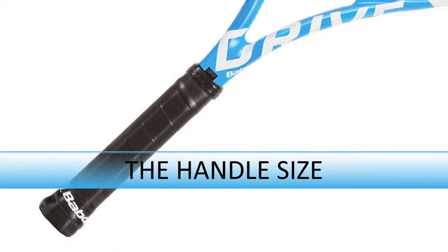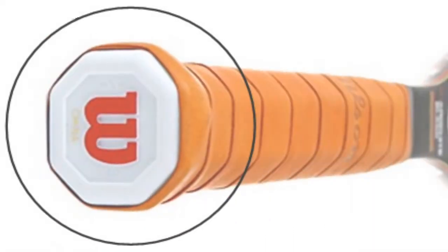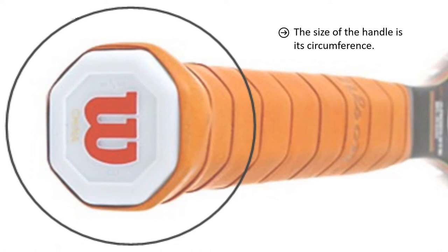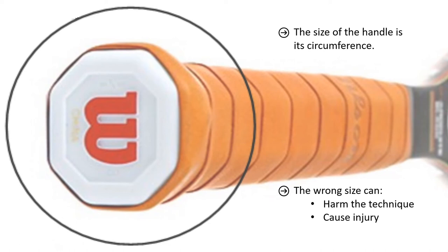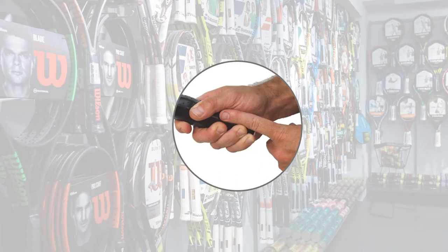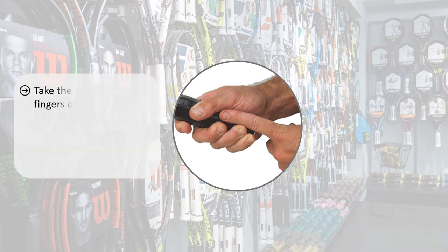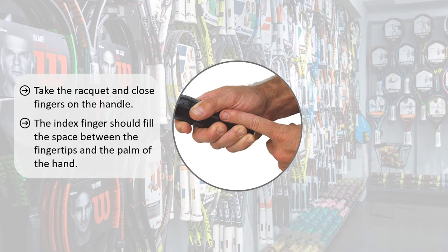Let's now look at the handle size of a racket. What is meant by the size of the handle is actually its circumference and not its length. An unsuitable size for the player's hand interferes with technique and can result in injury — for example, a handle that is too thick forces the player to hold the racket tighter, causing additional tension in the wrist and forearm. There are two ways to determine the right size. The first, the simplest: ask the customer to take the racket and close their fingers on the handle. The space between the fingertips and the palm of the hand should allow the index finger of the other hand to be placed in it to fill the space.